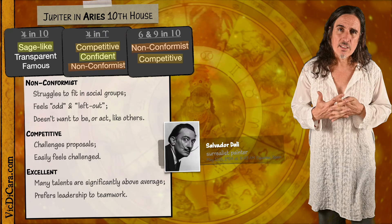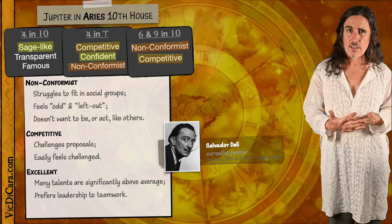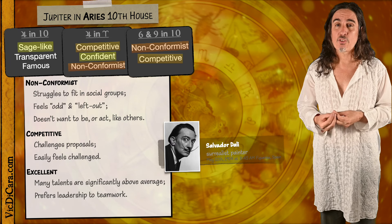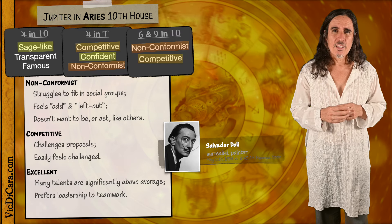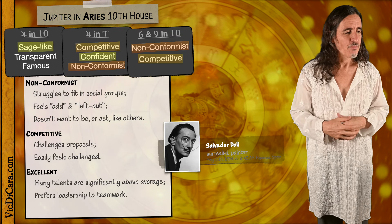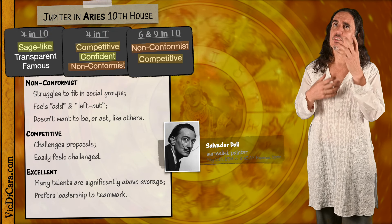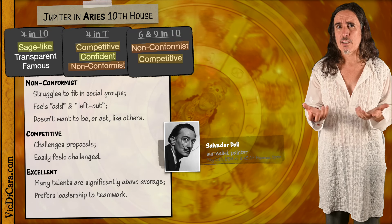Salvador Dali, the great painter, is a famous example of somebody with Jupiter in Aries in the Tenth House. He really does illustrate these principles quite well. He's so nonconformist — the epitome of nonconformity. He's quite challenging to the norms and certainly quite excellent. You can also see how he's sage-like, because he's an artist, and an artist is like a type of intellectual. If we look at his chart in more detail, is it Jupiter in the Tenth House in Aries that's making him artistic? Not really. The openness of Jupiter and the Tenth House helps an artistic person express and communicate their inner ideas, but Jupiter in the Tenth House alone won't create people like Dali on a regular basis.